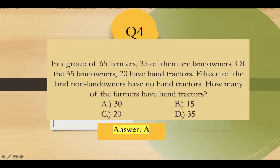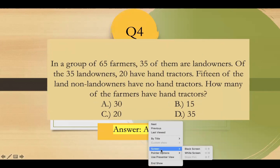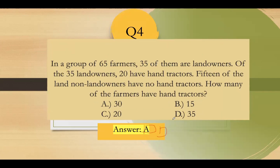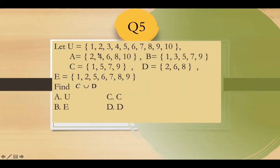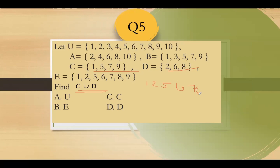The answer is letter D. Question number five: given the universal set {1 through 10}, A = {2,4,6,8,10}, B = {1,3,5,7,9}, C = {1,5,7,9}, D = {2,6,8}, E = {1,2,5,6,7,8,9}. Find C union D. Combining the elements of C and D gives {1,2,5,6,7,8,9}, which matches set E. The answer is letter B.